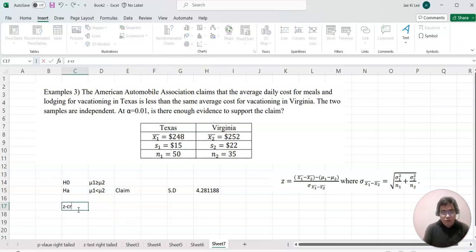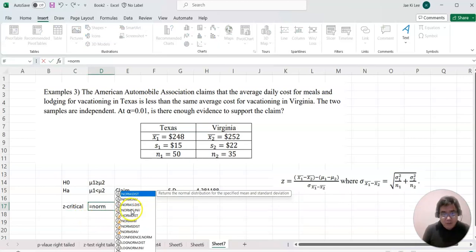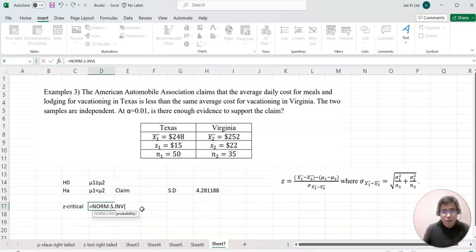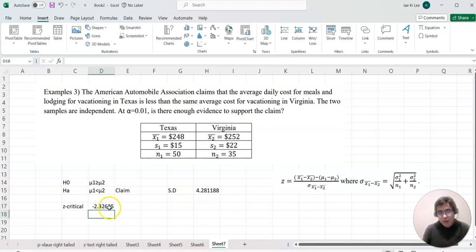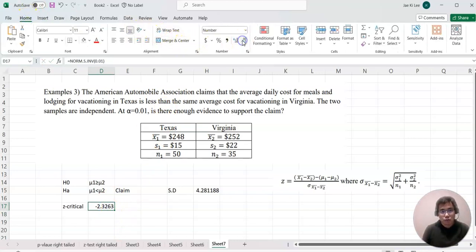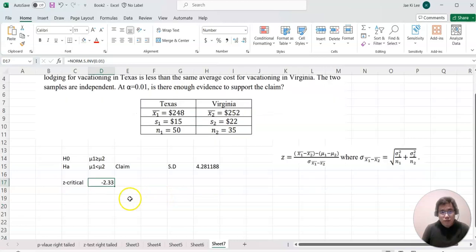Z critical value equals NORM.S.INV, and you just type the alpha value 0.01. That's our z critical value. I'm going to round it to about two digits so we can see better. Negative 2.33 is our z critical value.